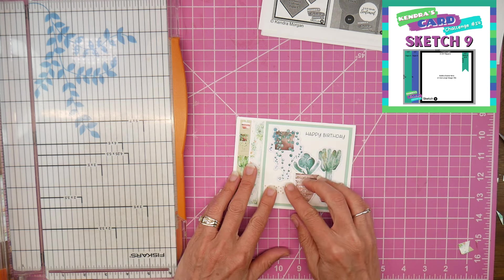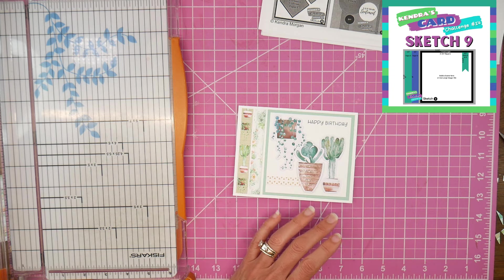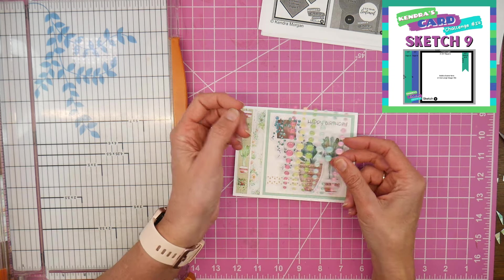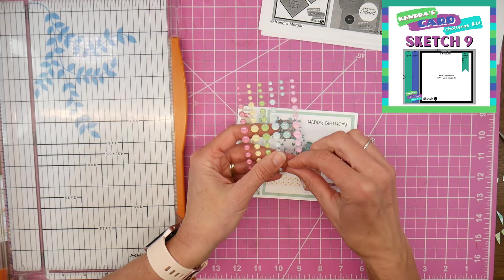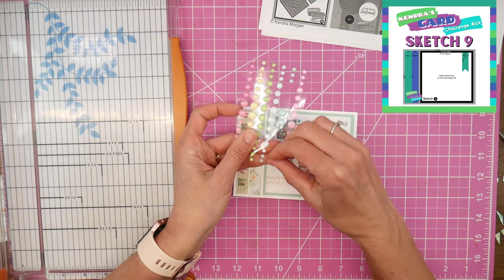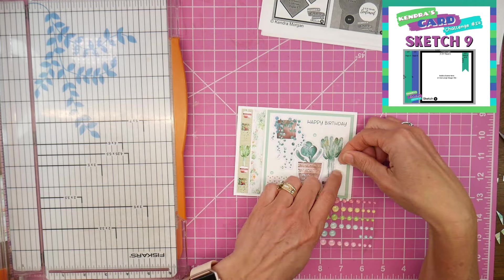And it just adds some weight that kind of counterbalances my sentiment in the top right corner. So I felt better about that, and then just brought in some of that same color of enamel dots. I just went with the smallest size and just added three of them in some of the white space just to help finish off the card.